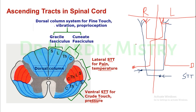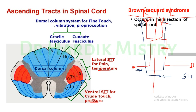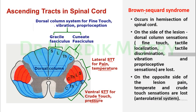For example, if the left side of the spinal cord has a lesion, it will cut fibers carrying sensory information from the right side via the spinothalamic tract, and also cut fibers on the same side via the dorsal column system. This is Brown-Séquard syndrome, which occurs in hemisection of the spinal cord. If one side of the spinal cord is damaged, on the side of the lesion dorsal column sensations — fine touch, tactile localization, tactile discrimination, vibration, and proprioception — are lost. On the opposite side of the lesion, pain, temperature, and crude touch sensations are lost due to cutting of the anterolateral system.